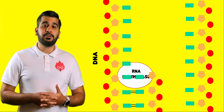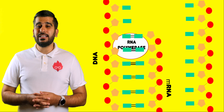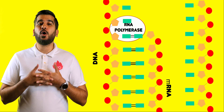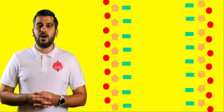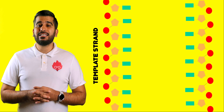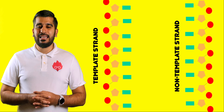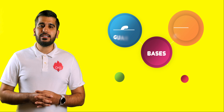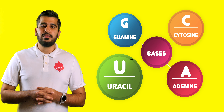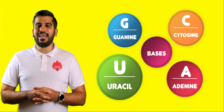RNA polymerase will then move along the DNA, joining free RNA nucleotides which bind to the exposed DNA bases by complementary base pairings. Only one DNA strand is read and is called the template strand; the other is called the non-template strand. RNA nucleotides contain the same bases as DNA, except thymine is replaced by uracil, so U base pairs with A.